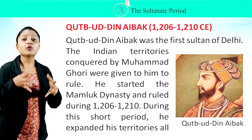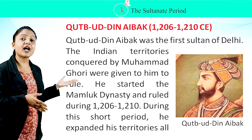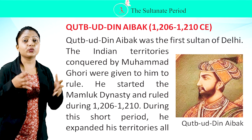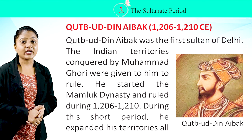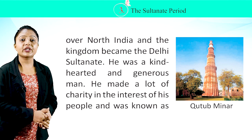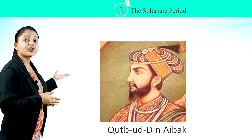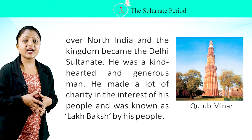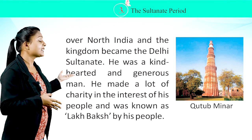Qutubuddin Aibak, 1206–1210 CE. Qutubuddin Aibak was the first Sultan of Delhi. The Indian territories conquered by Muhammad Ghori were given to him to rule. He started the Mamluk dynasty and ruled from 1206 to 1210. He was a kind-hearted and generous man who made a lot of charitable donations for his people and was known as Lakh Baksh.